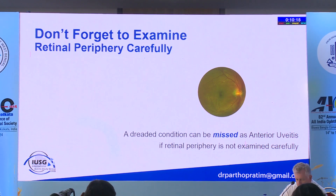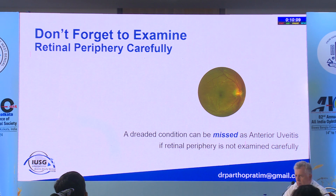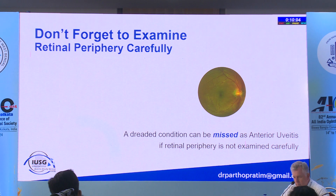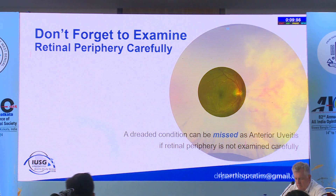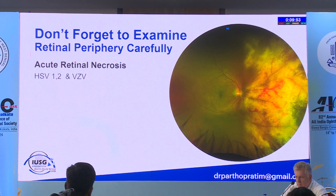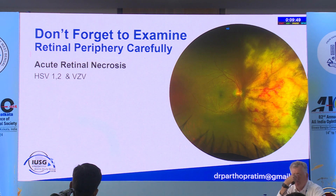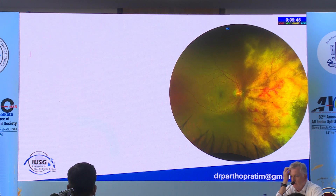Many ophthalmologists in India do only direct ophthalmoscopy. If you are not doing indirect ophthalmoscopy, sometimes you can miss critical findings. You can treat a viral ocular uveitis only as an anterior uveitis and completely miss a dreaded condition. If you do not examine the periphery, you can miss acute retinal necrosis, which is mostly caused by herpes viruses — herpes simplex 1, 2, and varicella zoster.